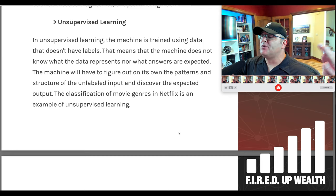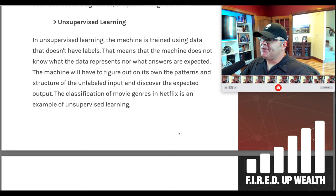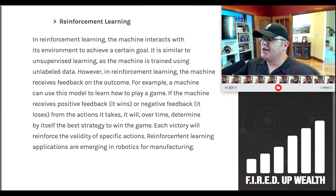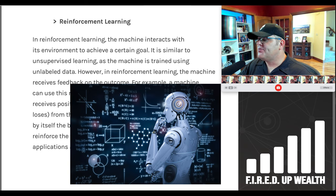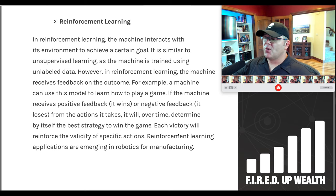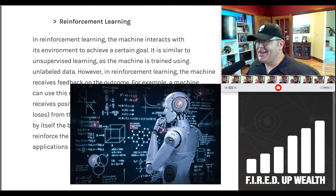In unsupervised learning, the machine is trained using data without any labels — it doesn't know what the data represents or what answers are expected, so it figures out on its own the patterns and structure. An example is the classification of movie genres on Netflix. In reinforcement learning, the machine interacts with its environment to achieve a goal. It receives feedback — positive if it wins, negative if it loses — and over time determines the best strategy. Applications are emerging in robotics for manufacturing.